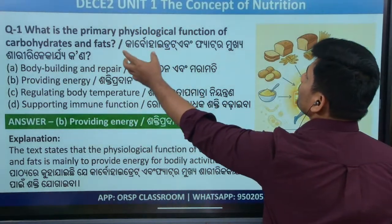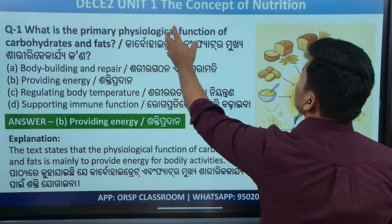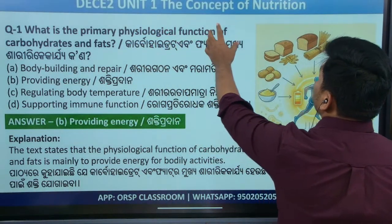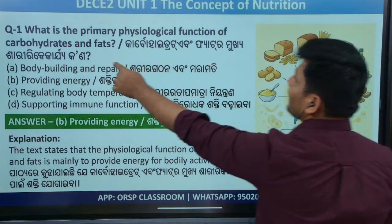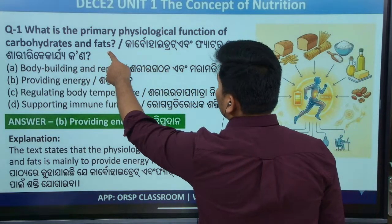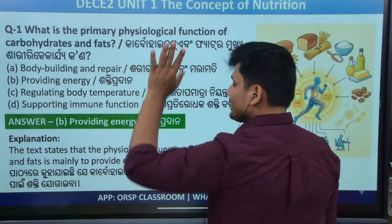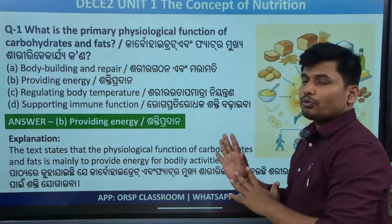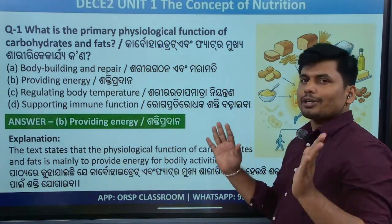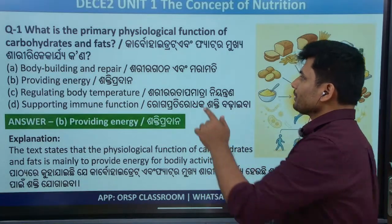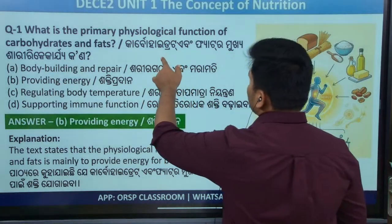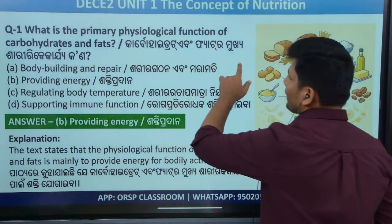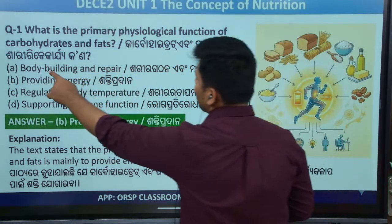For example, the primary physiological function of carbohydrate and fat — this is the chapter. You can read the book. What is carbohydrate, and the fat, and the body?